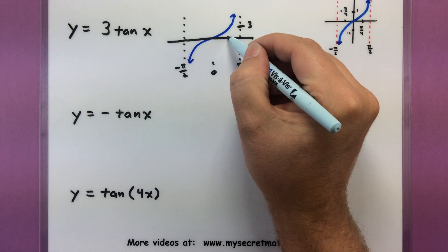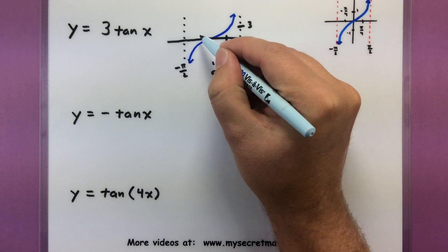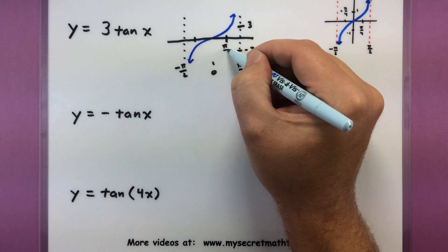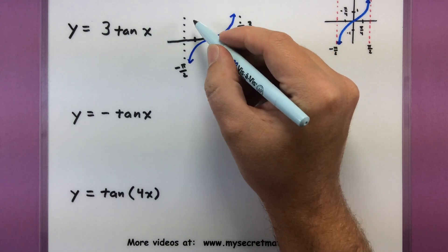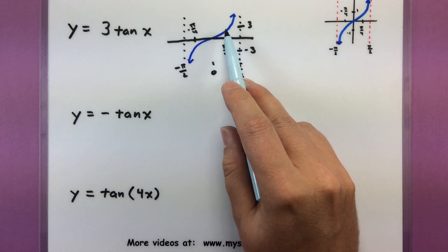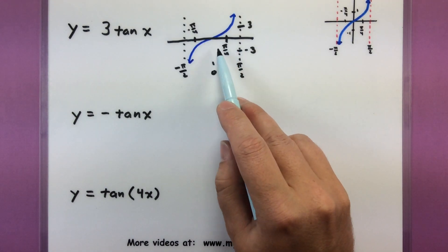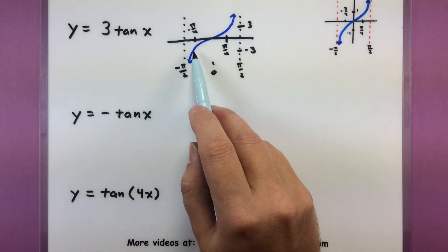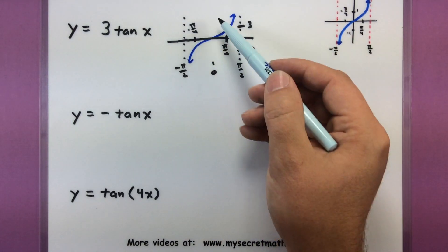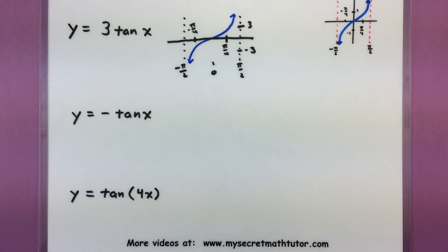If you want to take this a little further, maybe mark out a few more points, you could actually mark out where these quarter values are. This one would be at pi over 4, and this one would be at negative pi over 4. So at pi over 4 we're at 3, and at negative pi over 4 we're down at negative 3. Alright, let's move on to the next one.